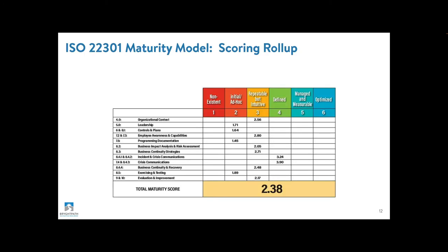For context, here is a graphic mock-up of what that maturity model looks like — this is the roll-up. There are about 90 factors in all, and the detailed version gets into all the various scoring factors and how we rated them through the evaluation. The maturity model is important because it gives you a strategic way to think about where you sit today with program maturity and where you should be aiming in the future.